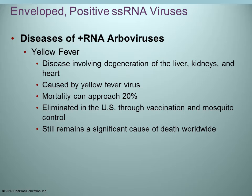Yellow fever is also caused by a virus. The disease ultimately leads to abnormal degeneration in the liver, kidneys, and heart. The mortality rate can reach up to 70 percent. It is still a problem in other areas of the world. In the US it has been pretty much eliminated because of vaccination and mosquito control. In other countries, it remains a problem.